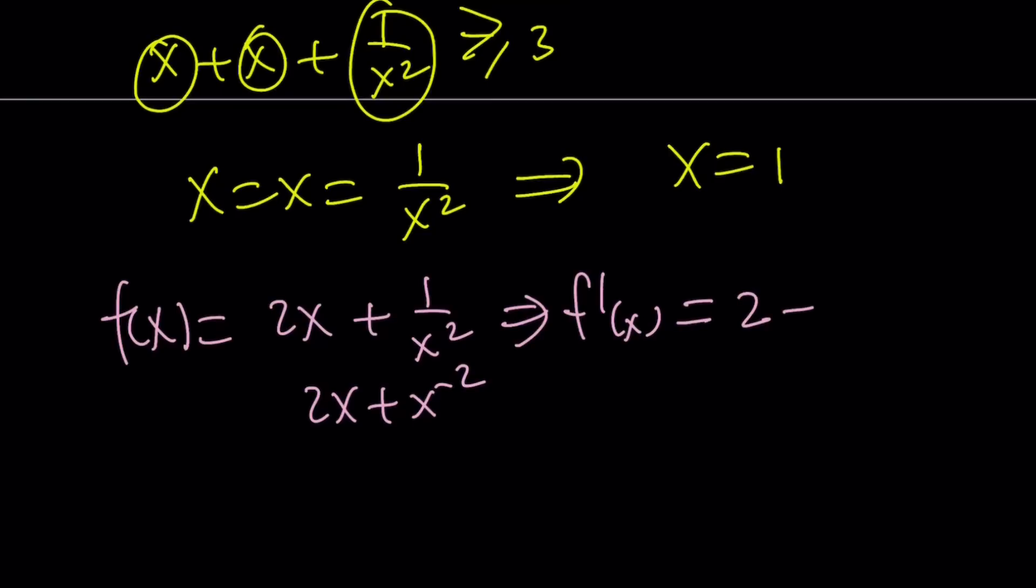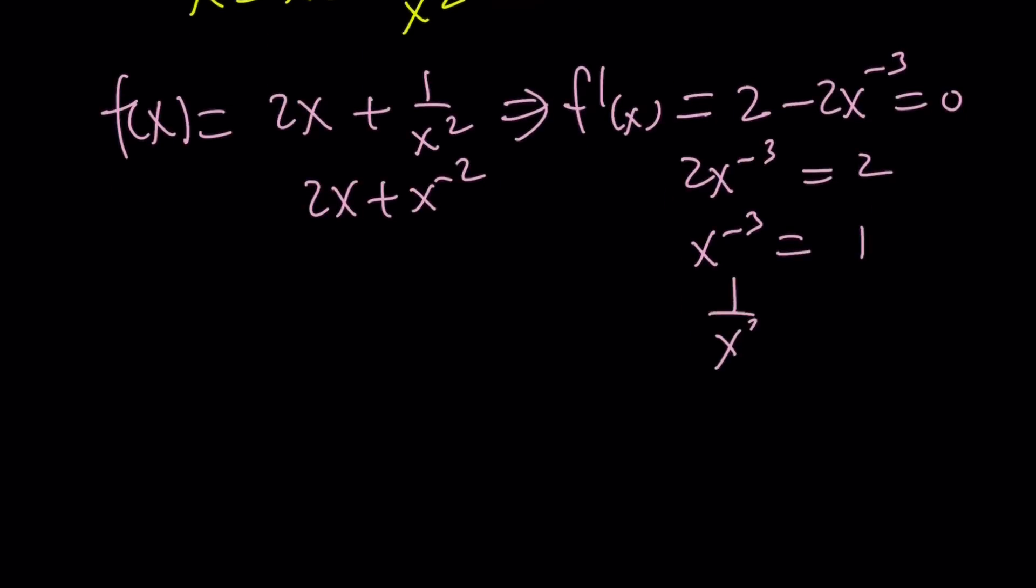When you differentiate, it's going to be 2 minus 2x to the power of negative 3. Set it equal to 0. 2x to the power of negative 3 is 2. x to the negative 3 is 1. 1 over x cubed equals 1. x cubed equals 1. x equals 1.